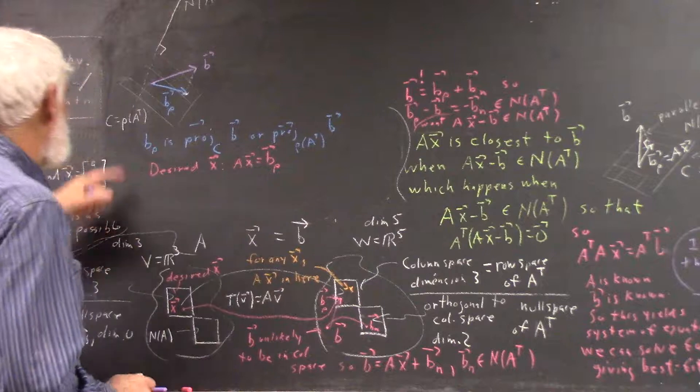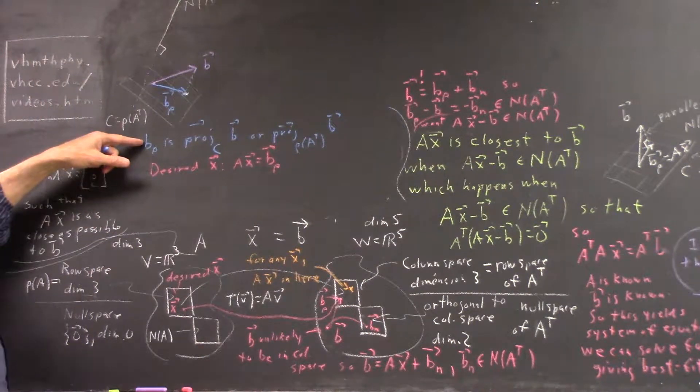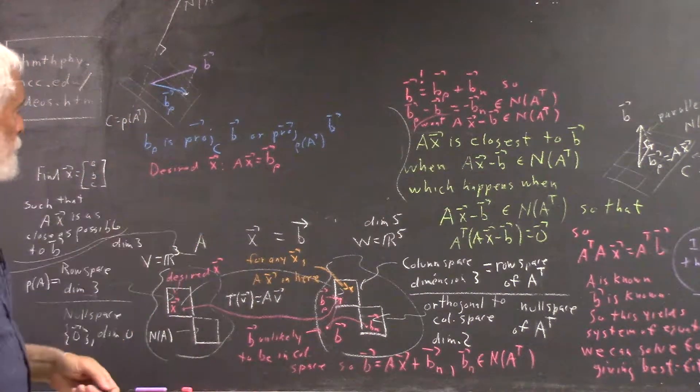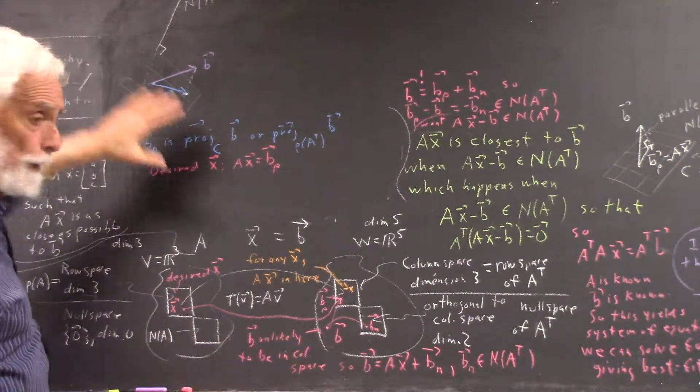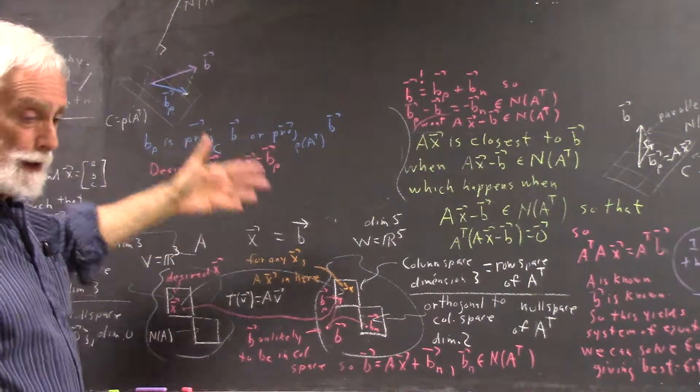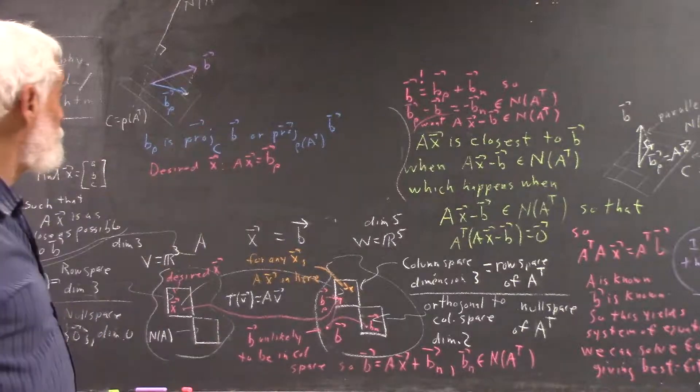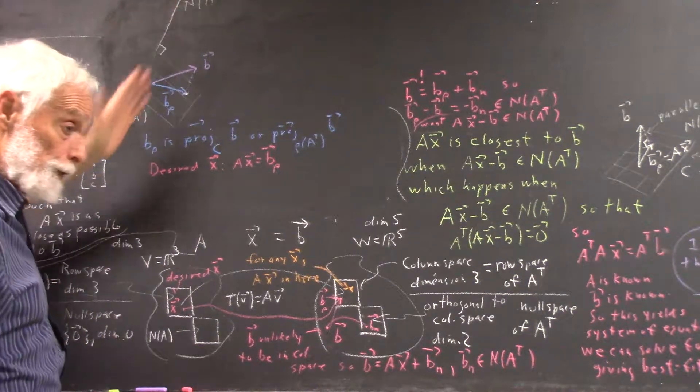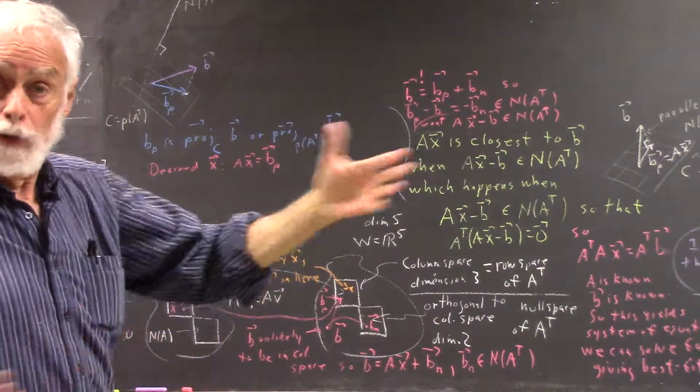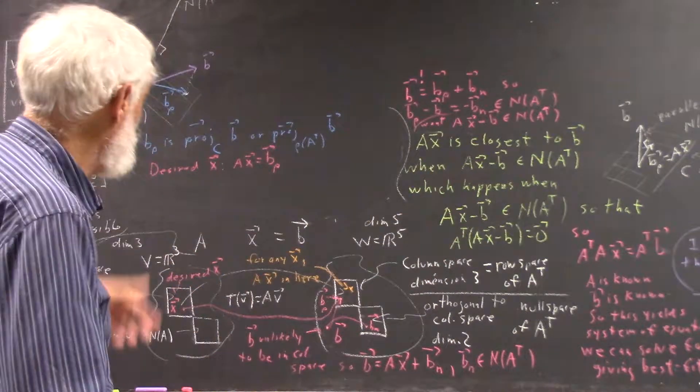We represented the column space of our transformation by a plane when it could be any dimension, 48 dimensional. We represented our null space by a line, but the null space could be 30 dimensional or 100 dimensional.